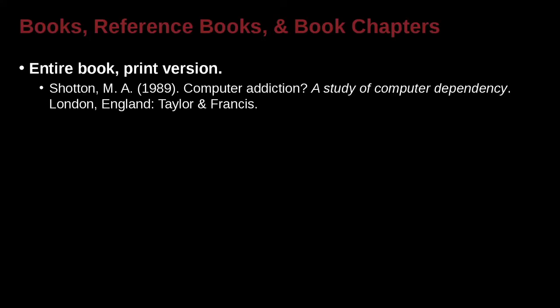Let's take a look at a book here, and this is a book by a single author. So this could be very straightforward. We have the author's name — last name first, then the first name, then the middle name. Remember we're always using the initial and a period and a space. We never write out the whole first name. We never write out the whole middle name.